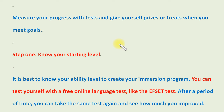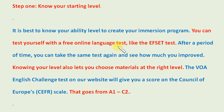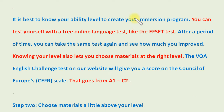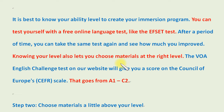Step one: know your starting level. It is best to know your ability level to create your immersion program. You can test yourself with a free online language test, like the Fset test. After a period of time, you can take the same test again and see how much you improved. Knowing your level also lets you choose materials at the right level. The VOA English challenge test on our website will give you a score on the Council of Europe's CEFR scale, which goes from A1 to C2.